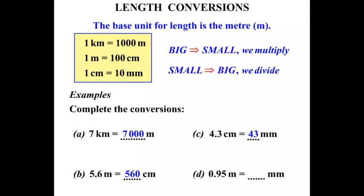Zero point nine five meters equals how many millimeters? Well meters to millimeters, what is the connection? Well on our table we know a connection between meters and centimeters, and then we know a connection between centimeters and millimeters. But it looks like we are going to take two steps for this one.